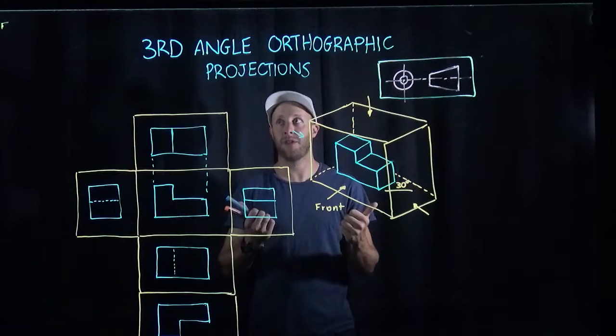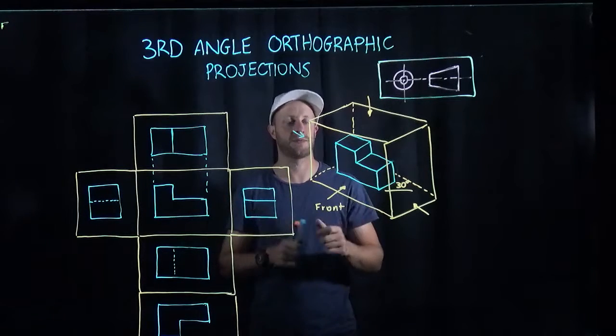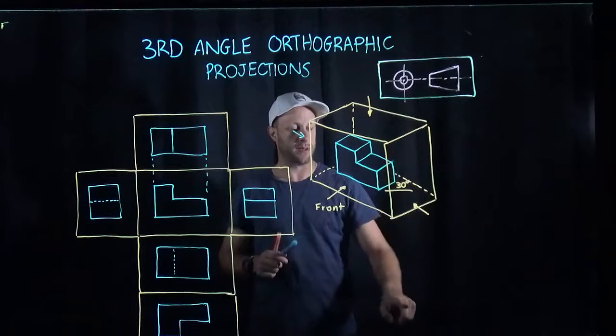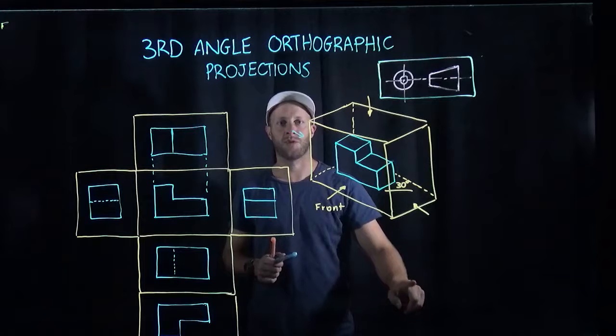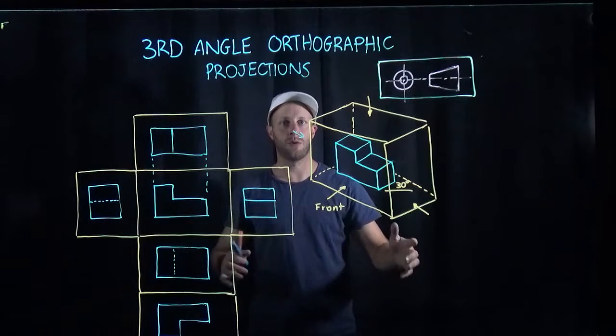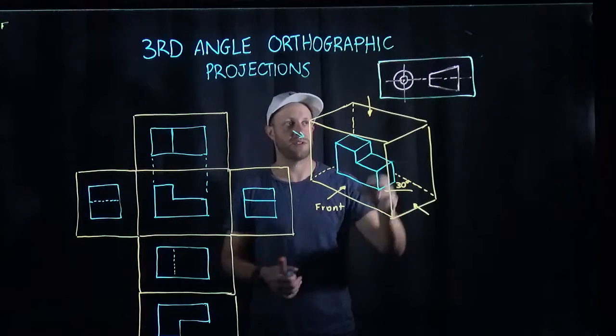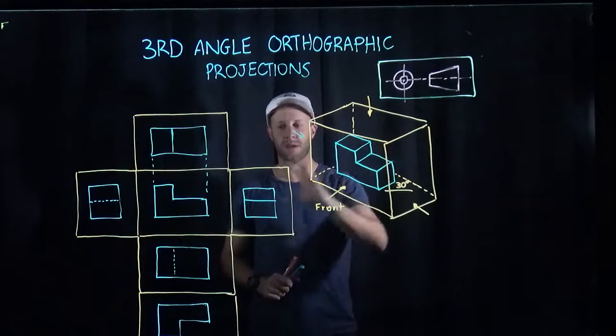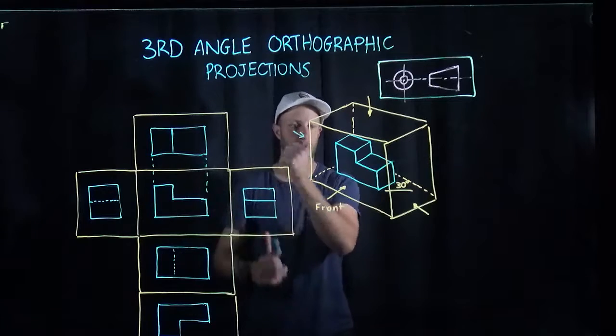Cool. That's third angle orthographic projections. Again, this is the symbol. You'll often see this symbol at the bottom corner of what we call the title block of your drawing. This just means that however the views are laid out, this is the way we need to see it—in this manner of how we unfold it.